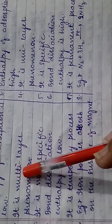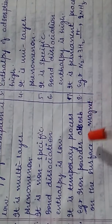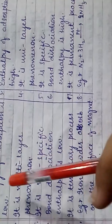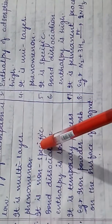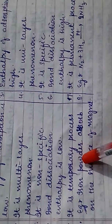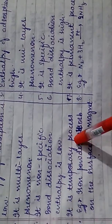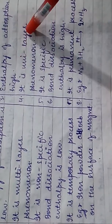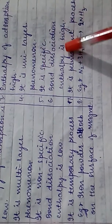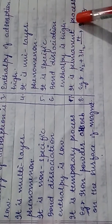Physical adsorption is a multi-layer phenomenon because when iron powder is adsorbed on a magnet, multiple layers form. It is non-specific because it does not require any specific substance for the process to occur. Bond association enthalpy is low and it is a temporary process. Chemisorption is a unilayer phenomenon because it is a chemical process, and it is specific because the reaction requires platinum as catalyst. Bond association enthalpy is high and it is a permanent process.